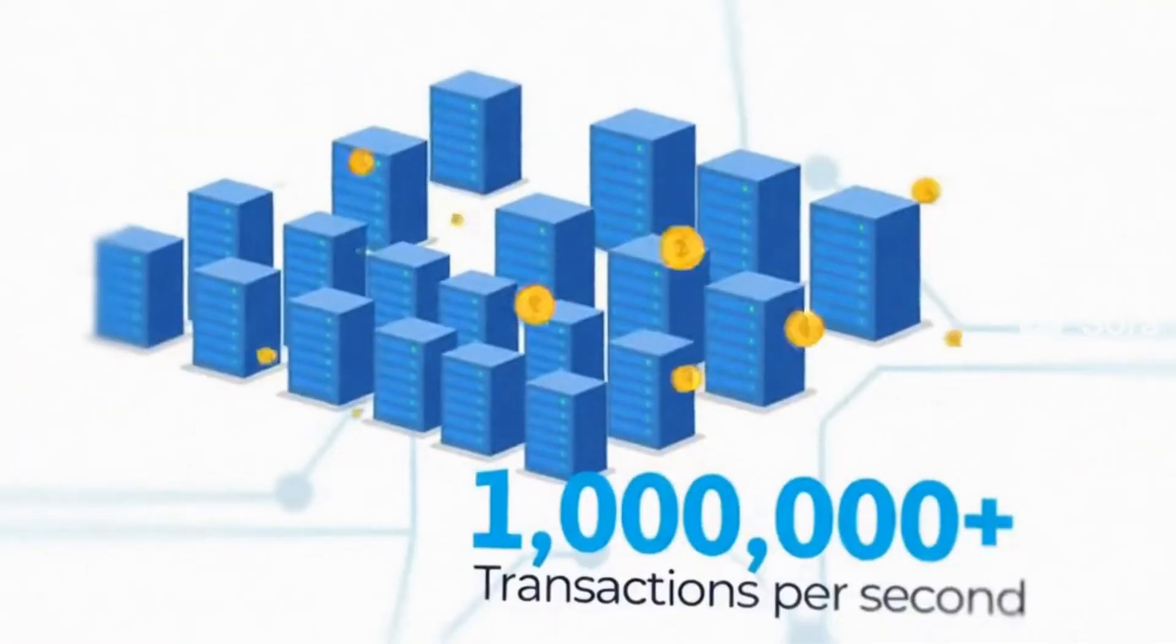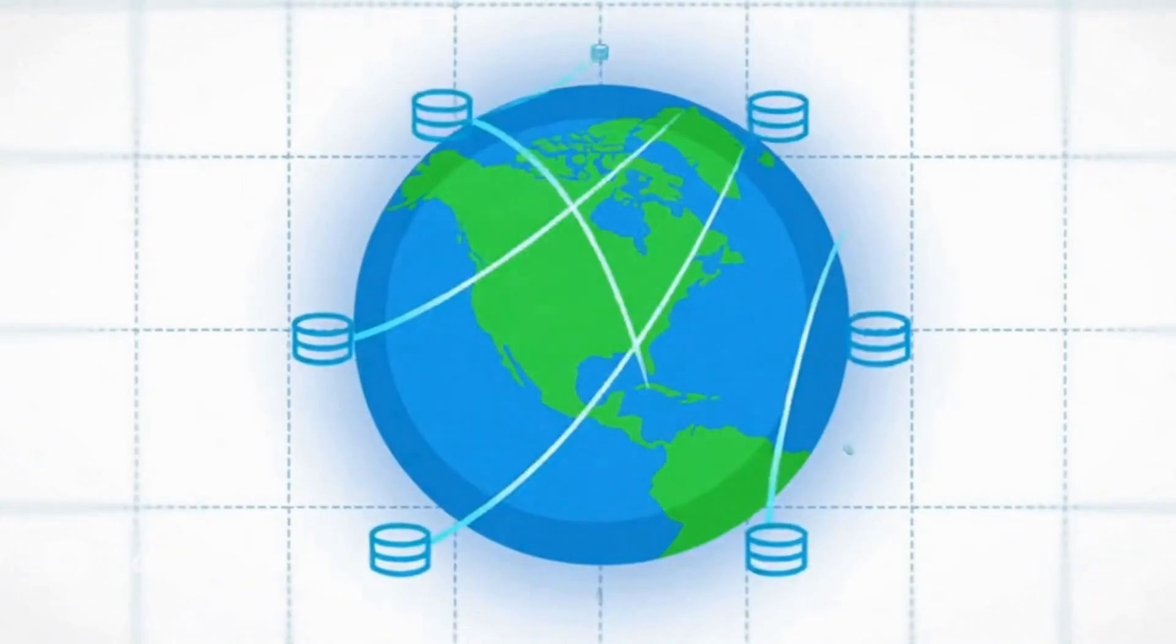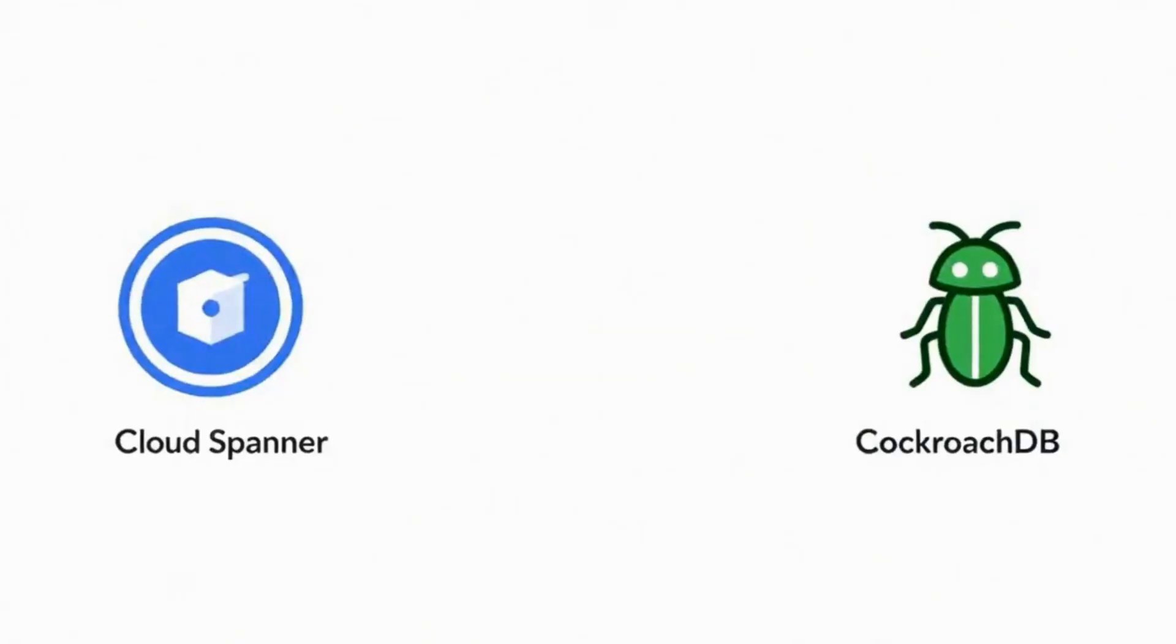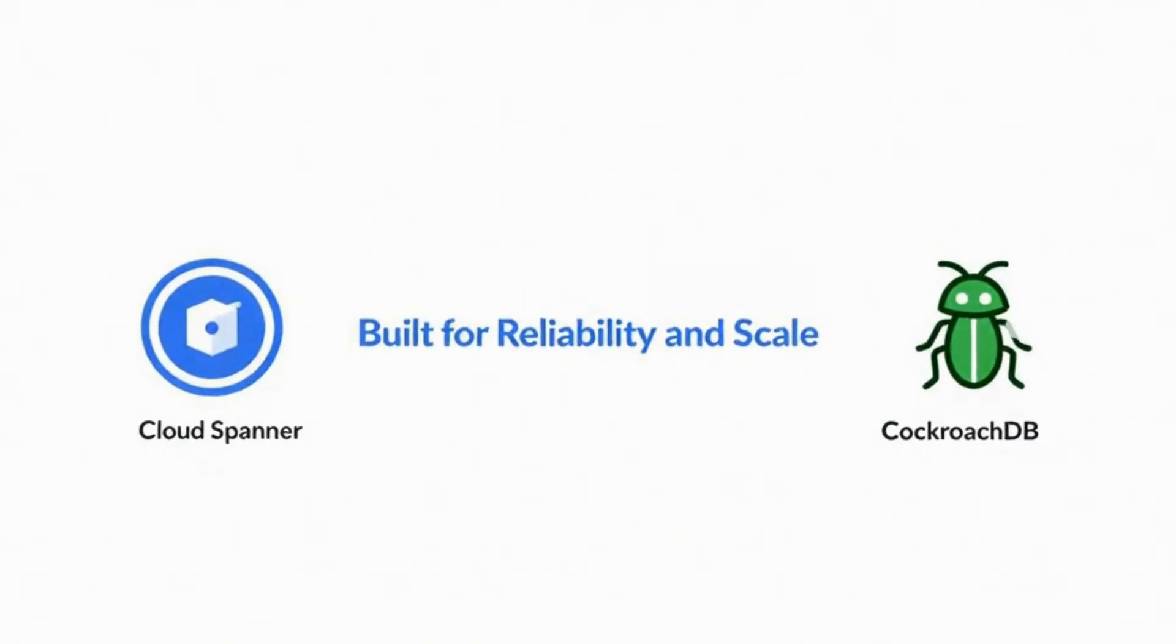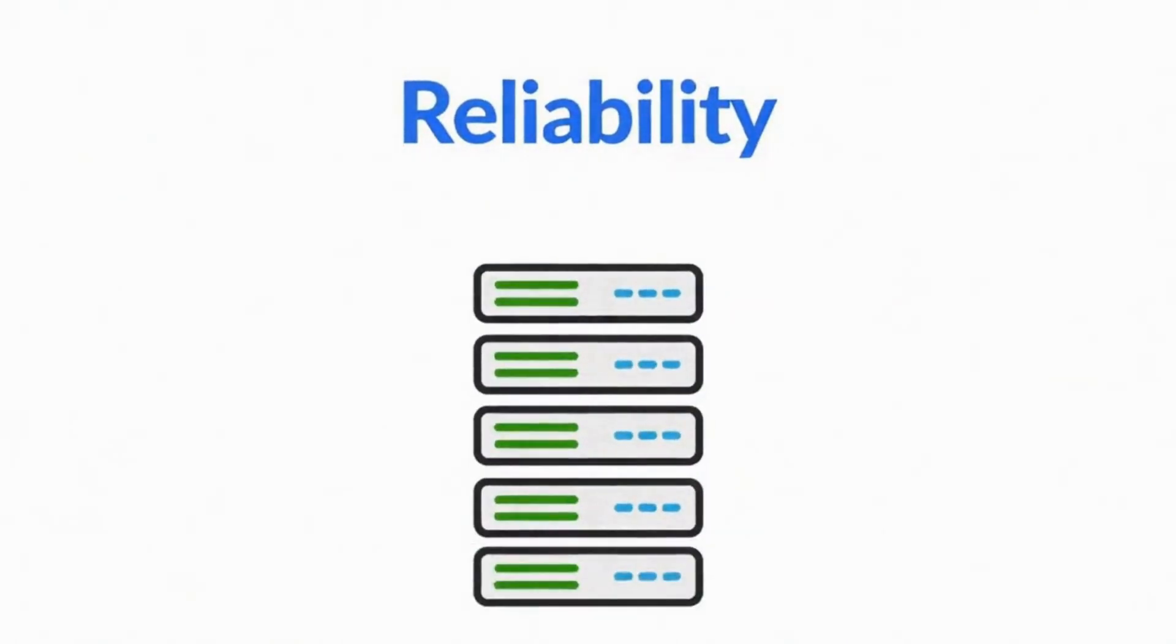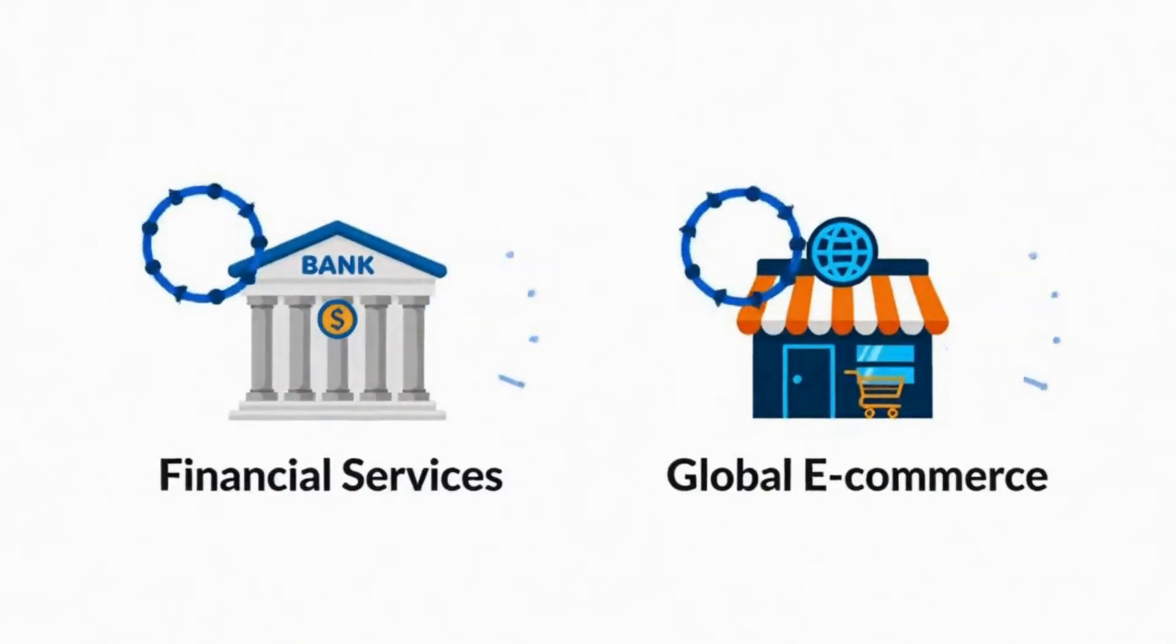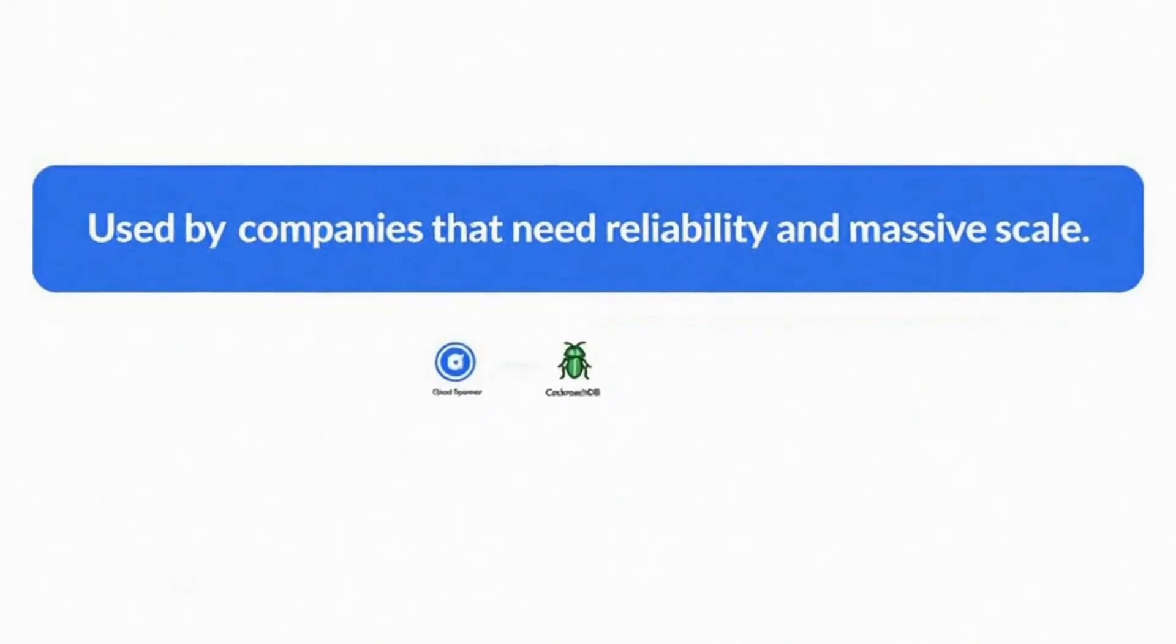They maintain the ACID properties, reliability features, that businesses depend on while being able to handle massive amounts of data across multiple servers. These are perfect for companies that need to process millions of transactions reliably while serving users around the world. Google Spanner and CockroachDB are examples used by companies that need both reliability and massive scale, like financial services and global e-commerce platforms.